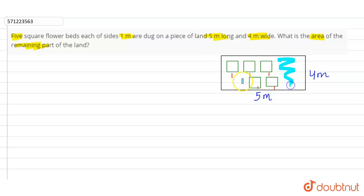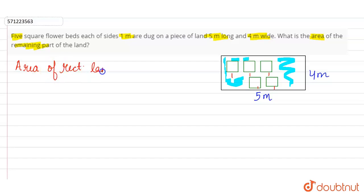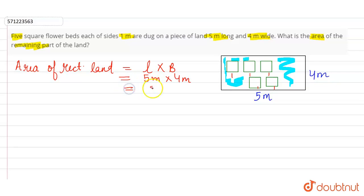The remaining part of the land is what we need to find. First, we will find the area of the rectangular land. The formula for the area of a rectangle is length into breadth. Length is given as five meters and breadth is given as four meters, so the area of the land equals five into four, which is twenty meter square.